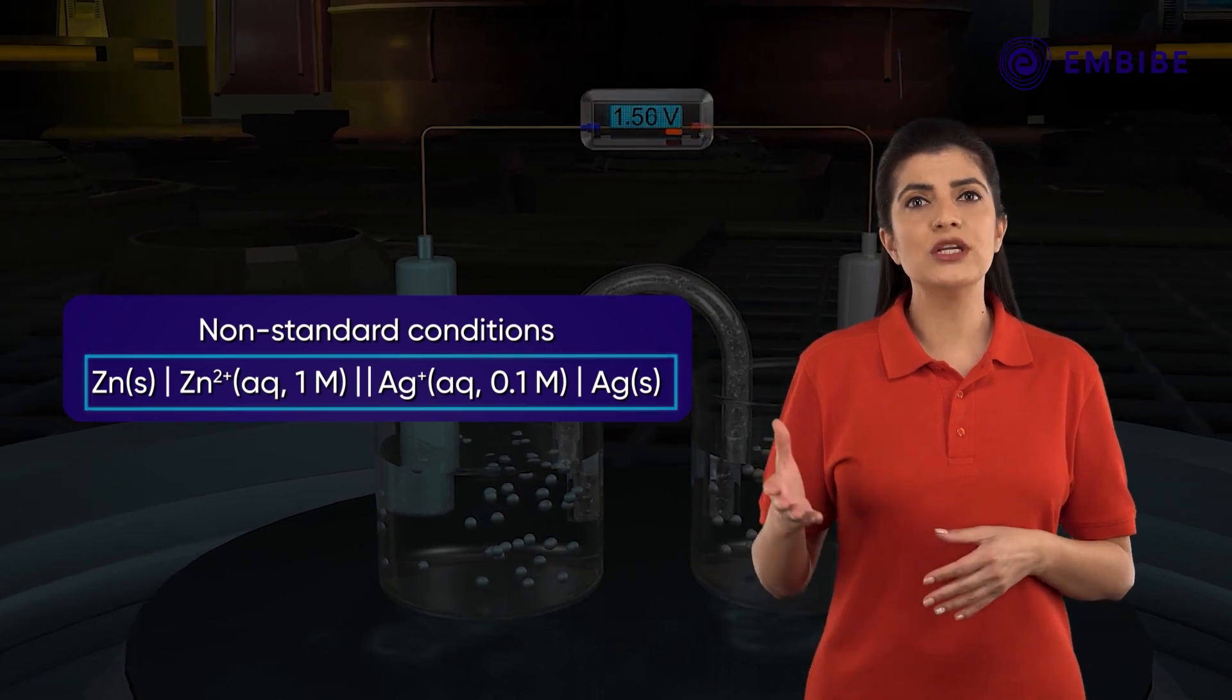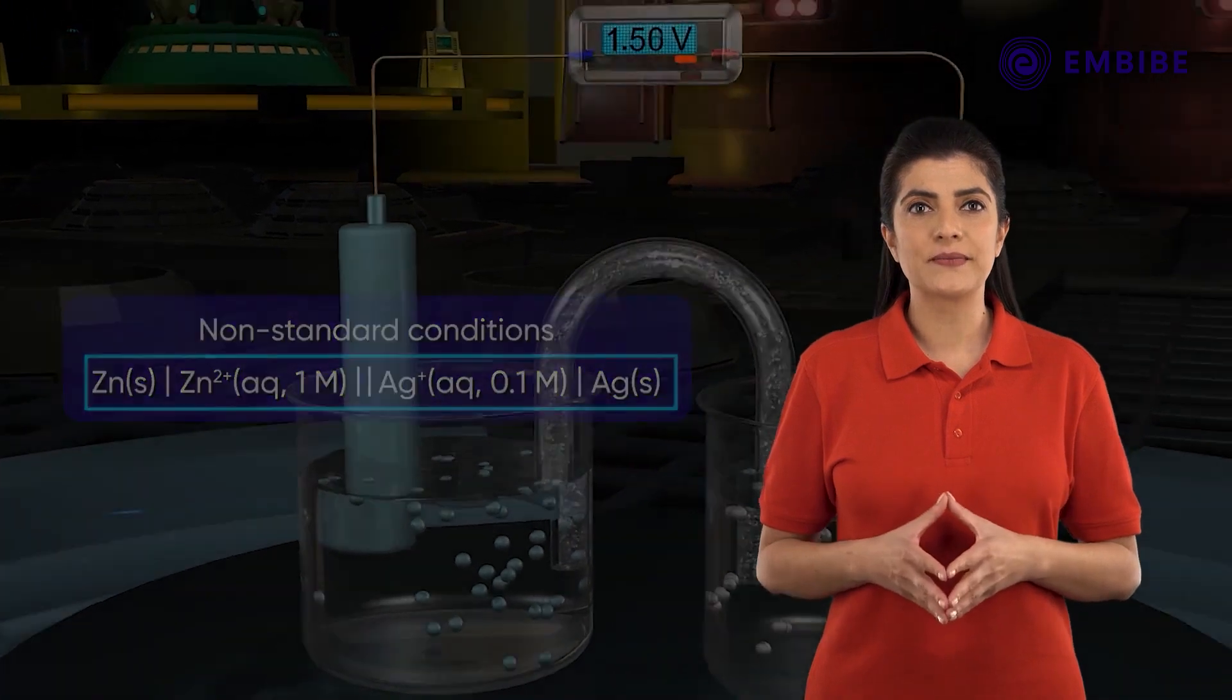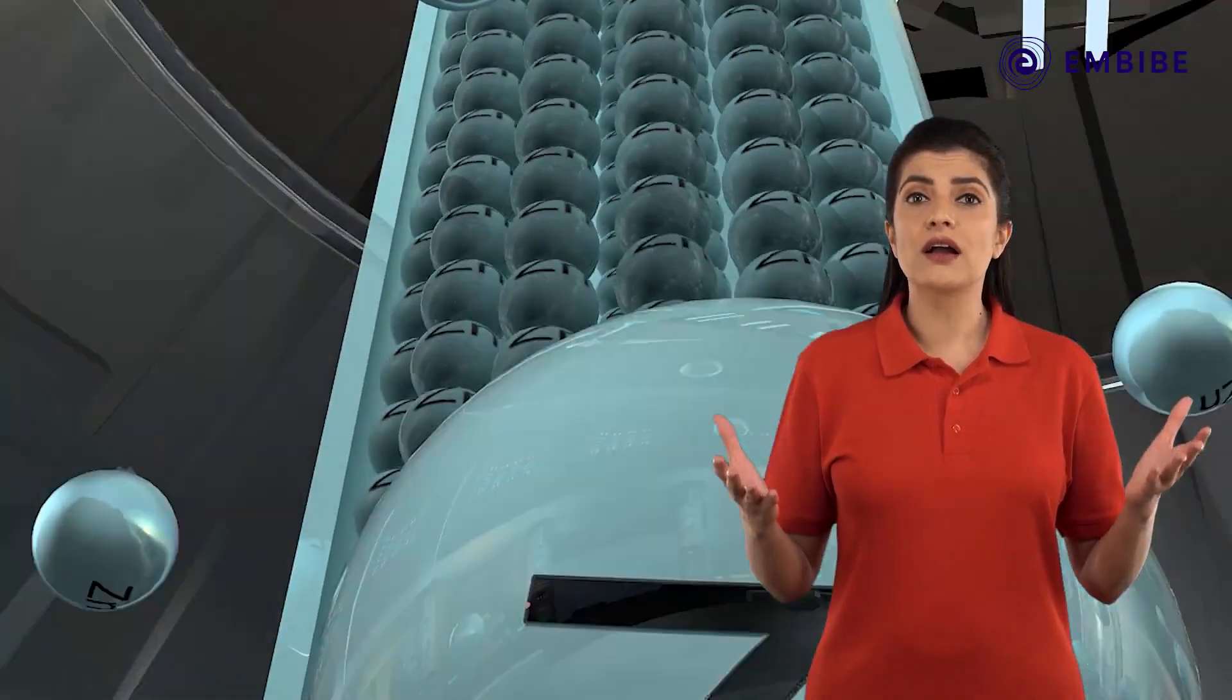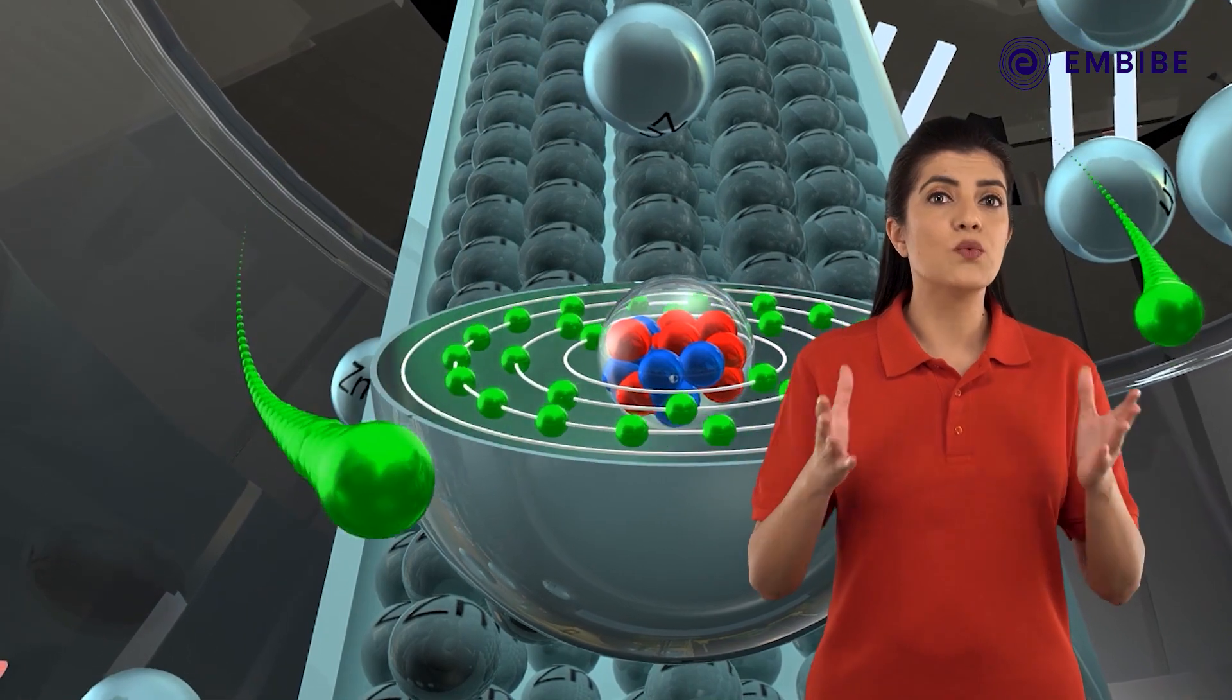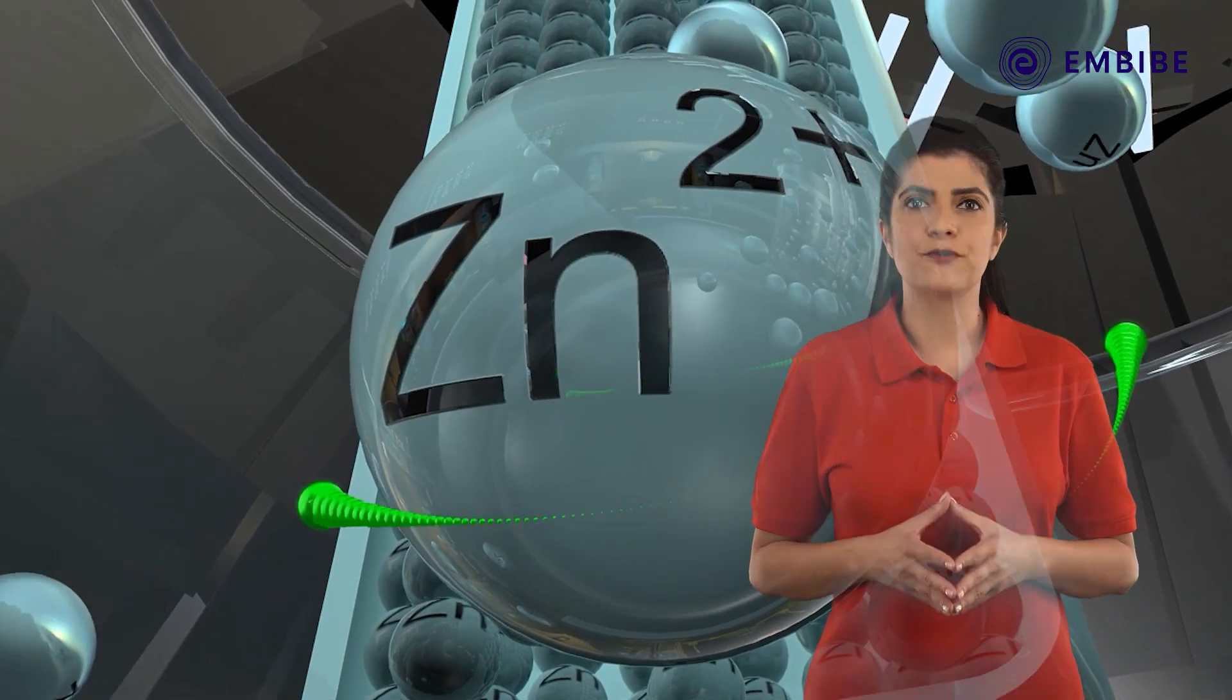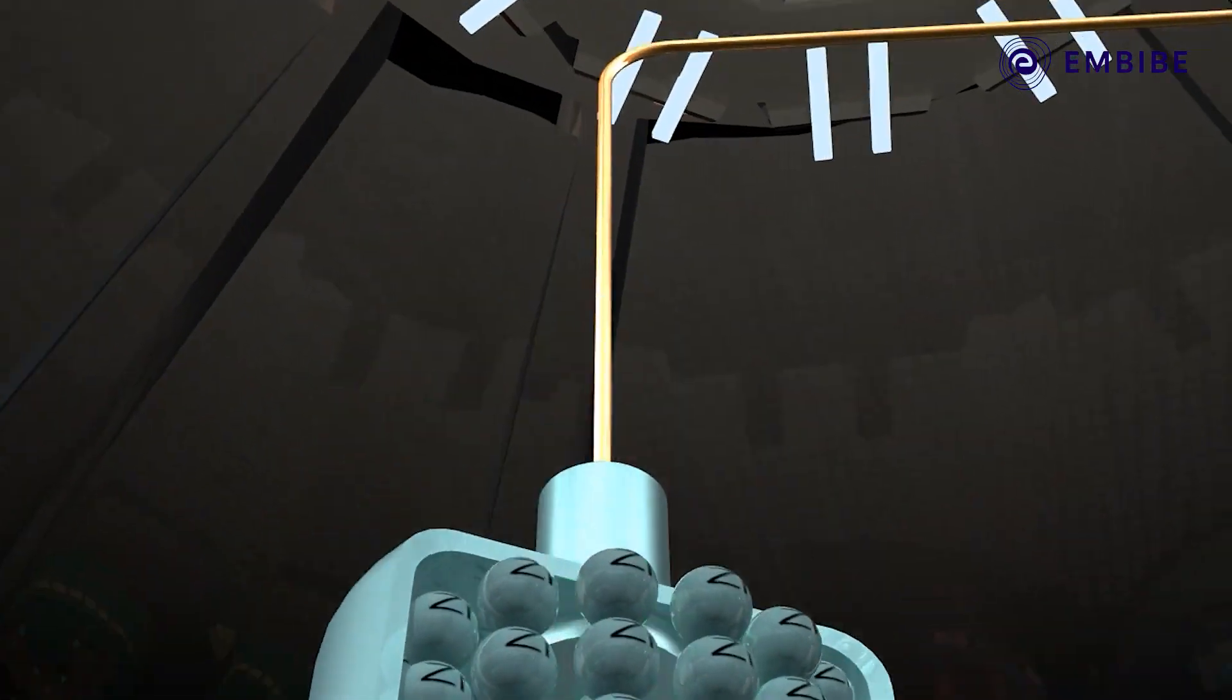Now consider a cell with different concentrations: Zn | Zn²⁺ (0.1 molar) || Ag⁺ (0.1 molar) | Ag solid. Although the reactions occurring in the two half cells are the same, let us study why the cell potential is different. The potential of such a cell is calculated by a special equation known as Nernst equation.